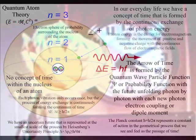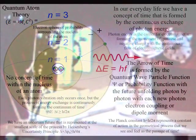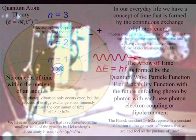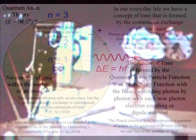This represents an emergent process, with the future unfolding, with each photon-electron coupling, or dipole moment. In our everyday life, we measure this process as a period of time, relative to the atoms of the periodic table, and the wavelength of the light.